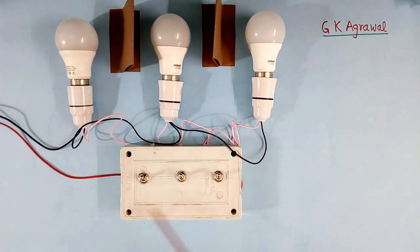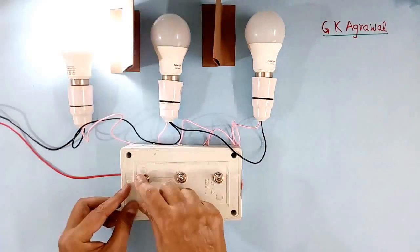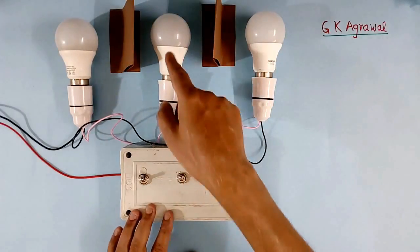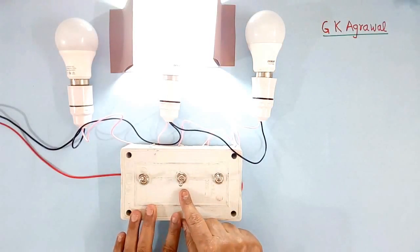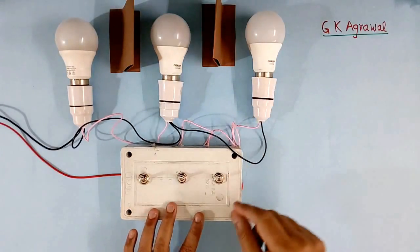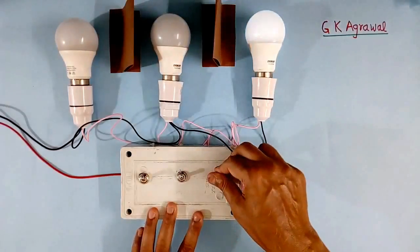Now I will show the operation of this. This bulb can be switched on using this switch and switch off also. This bulb can be switched on using this switch and can be switched off also. This bulb can be switched on using this switch and can be switched off also.